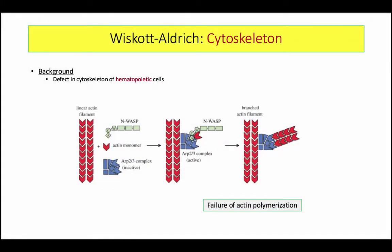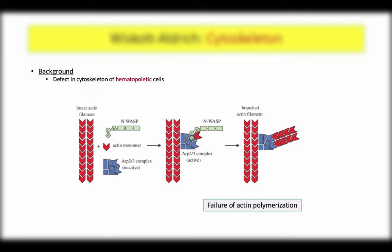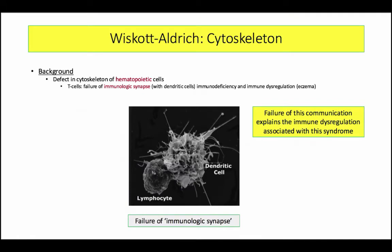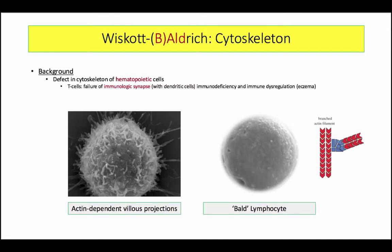It is really useful to think of Wiscott-Aldrich as a defect of the cytoskeleton. The pathogenetic defect is characterized by abnormal actin polymerization due to a defect in the WASP protein. Pictured here is a T lymphocyte interacting with a dendritic cell — this interaction is described as the immunologic synapse. With the defect in the cytoskeleton, the synapse does not form, leading to immune dysregulation. On the left is a normal lymphocyte with actin-dependent villus projections; on the right, a bald lymphocyte with no cytoskeleton rearrangements. Note the new name: Wiscott-Baldridge — bald lymphocytes that can't interact with dendritic cells.